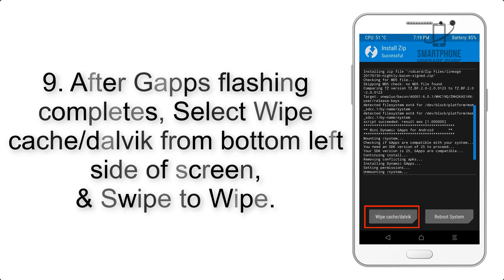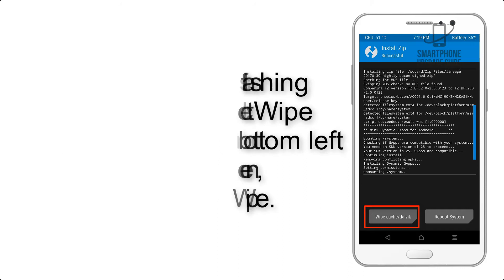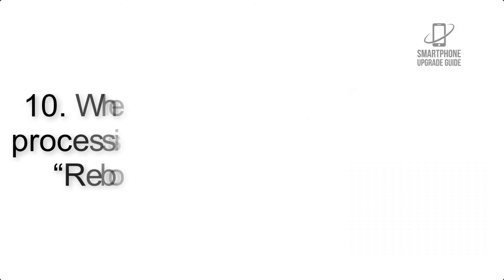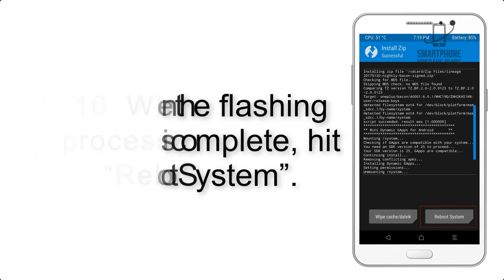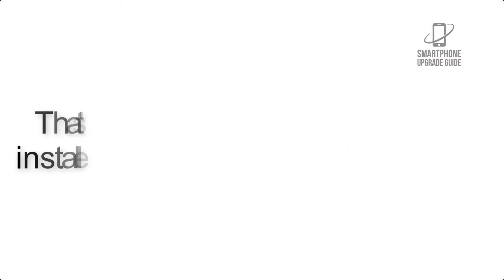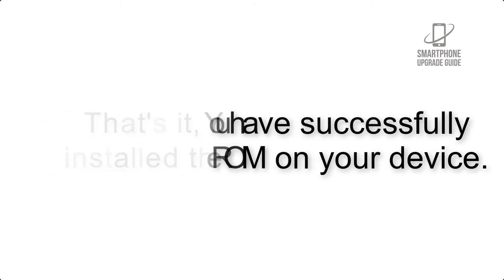Step 8: Flash the GApps zip package in the same manner. Step 9: After GApps flashing completes, select Wipe Cache and Dalvik from the bottom left side of the screen and swipe to wipe. Step 10: When the flashing process is complete, hit Reboot System. You have successfully installed the ROM on your device.